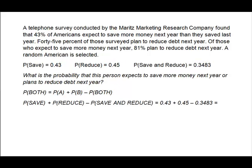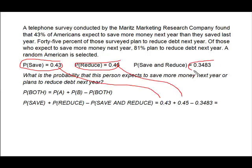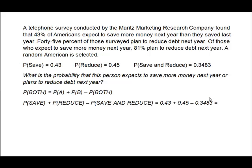So I've dropped in the probabilities: probability of save plus probability of reduce minus probability of both. That gives me 0.43 plus 0.45 minus the joint probability of 0.3483, which gives me 0.5317. So the probability that a randomly selected American expects to save more money next year or plans to reduce debt next year is 53.17%.